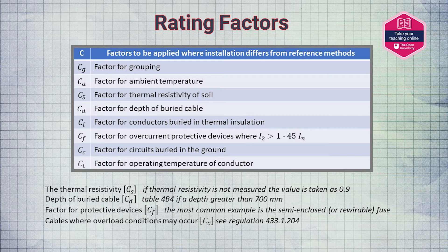A few notes regarding rating factors: CS is the thermal resistivity of the soil — if not measured, the value can be taken as 0.9. CD uses table 4B4 for cables at a depth greater than 0.7 of a metre. CF is a factor used for semi-enclosed or re-wireable fuses, with a value of 0.725. CC applies where overload conditions may occur — please refer to Regulation 433.1.204.